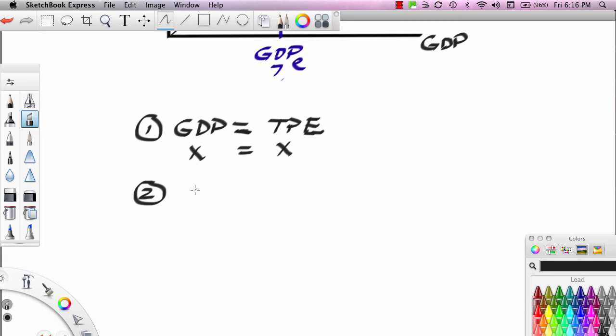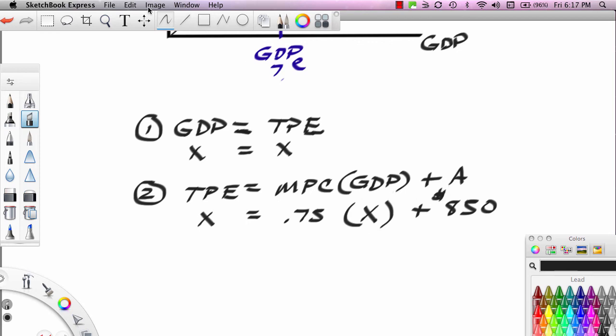The second premise we're going to work with is that TPE always equals MPC times GDP plus A. This is always true. This is true for every point on the expenditure line, every coordinate. And it's also true of the equilibrium point. So we don't know what equilibrium TPE is, X. We don't know what equilibrium GDP is, X. But we know they have to fit the expenditure line. What expenditure line? The expenditure line that has a slope of what? 0.75. And the expenditure line that has an A of 850. Now we have an equation that we can actually solve.